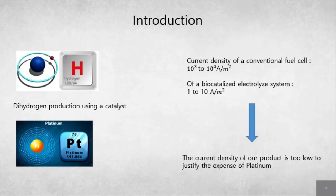First introduction. Hydrogen can be produced basically by using a catalyst with the process of electrolysis, just putting some electricity into water and it will produce hydrogen. But we want to make it more optimum. Generally, platinum is used as a catalyst to electrolyze water into hydrogen, but the problem is the current density. Platinum is really expensive, and with a biocatalyzed electrolysis, as you can see at the top right of the slide, the current density of a biocatalyzed electrolysis is really low compared to one of the conventional fuel cells.